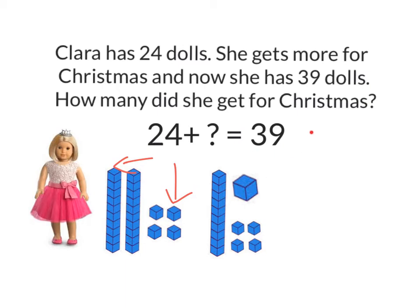Let's check if we have 39 altogether: 10, 20, 30, 1, 2, 3, 4, 5, 6, 7, 8, 9 — I have got 39 altogether. And this is my change-unknown answer; this is what needs to go here. What have I got here? I've got 10, 11, 12, 13, 14, 15. So 24 plus 15 more gets me to 39. I used place value to help me work out the answer to that.